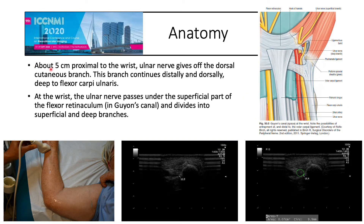About 5 cm proximal to the wrist, the ulnar nerve gives off the dorsal cutaneous branch, which continues distally and dorsally deep to the flexor carpi ulnaris. At the wrist, the ulnar nerve passes under the superficial part of the flexor retinaculum in Guyon's canal and divides into superficial and deep branches. You can see the anatomical picture here, with the probe position shown — the pisiform, the ulnar nerve, and the ulnar artery.